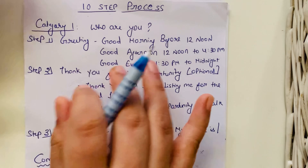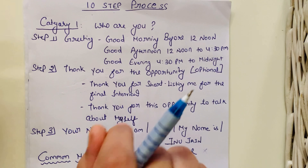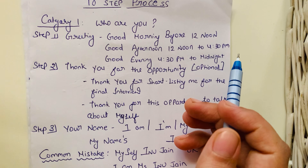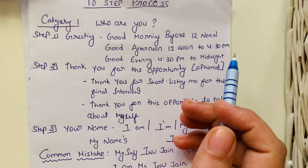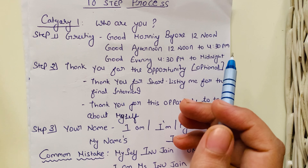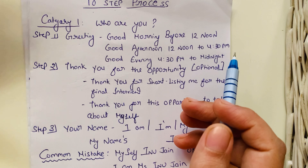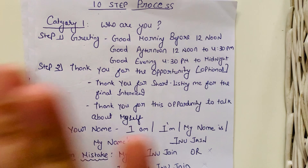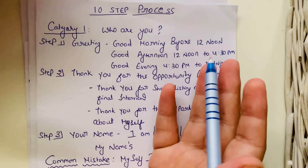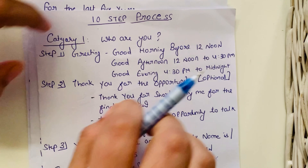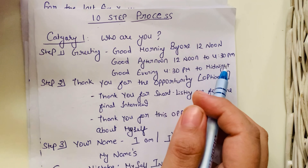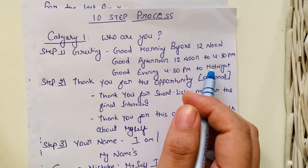The first set of steps are about who you are. Step number one is greetings. Formal greetings are highly recommended: 'Good morning' before 12 noon, 'Good afternoon' after 12 noon, and 'Good evening' anytime after 4:30 or 5 in the evening. The rules are: smile, be confident, and make good eye contact. A common mistake is saying 'hey,' 'hi,' or 'what's up,' and also fumbling between 'good morning' and 'good afternoon.'